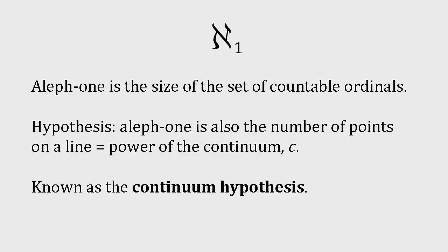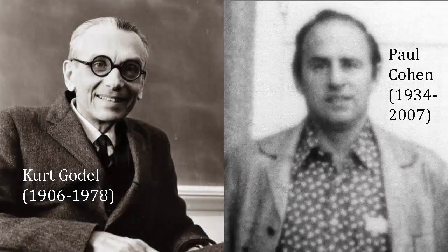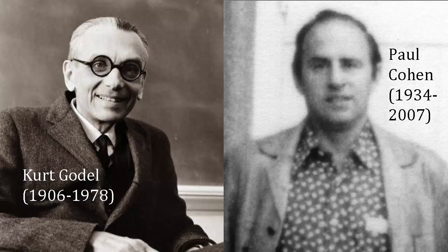We now know why, and it strikes to the very foundations of mathematics. In the 1930s, Austrian-born logician Kurt Gödel showed that it's impossible to prove the continuum hypothesis is wrong, starting from the standard axioms of set theory.